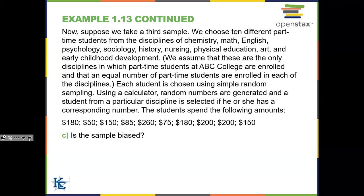Now suppose we take a third sample: we choose 10 part-time students from each of ten disciplines — chemistry, math, English, psychology, sociology, history, nursing, physical education, art, and early childhood development — assuming equal enrollment in each discipline. Each student is chosen using simple random sampling via a random number generator. This sample is probably not biased because it covers all disciplines, everyone has the same opportunity to be chosen, and the discipline sizes are relatively equal — this leads me to believe it is unbiased.